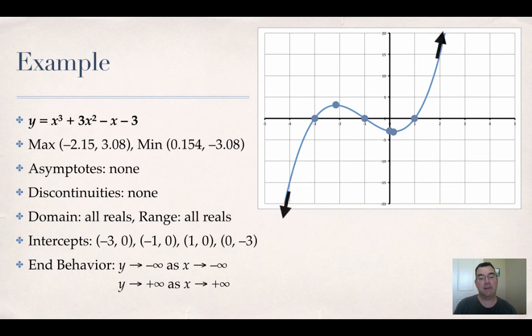The end behavior is: as x gets really negative, y gets really negative - that's the arrow that goes down and to the left. And as x gets really positive, y gets really positive - that's the arrow that goes up and to the right.